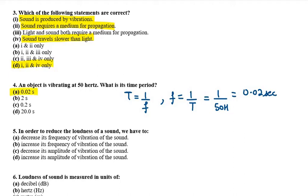Fifth part is, in order to reduce the loudness of sound, we have to... I told you that loudness depends on amplitude. If you decrease the amplitude of sound, then your loudness will also decrease. Decrease its amplitude of vibration of sound. When it comes to loudness, there is no dependency on frequency. So A and B are cancelled. Which one is correct? C. Because we have to decrease the amplitude. If you want to increase loudness, then you have to increase its amplitude.